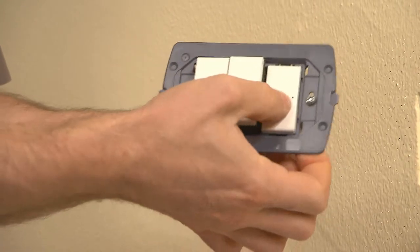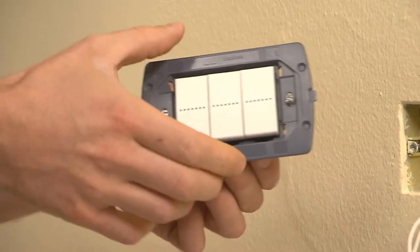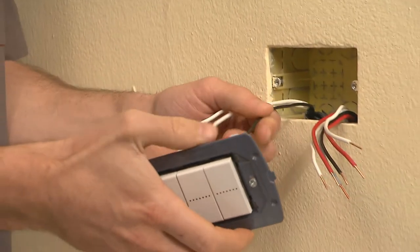On this support, all the modular devices of the Living Light series in white, tech, and anthracite can be installed.